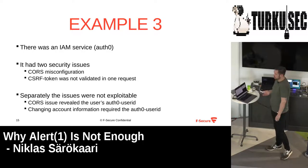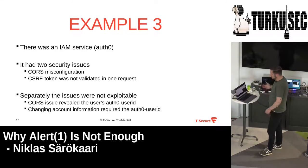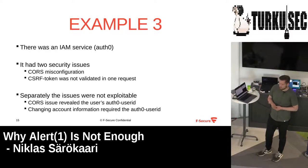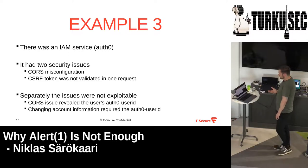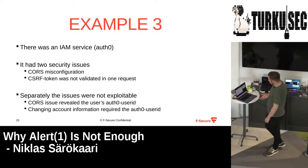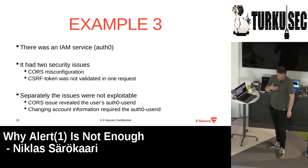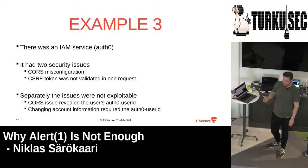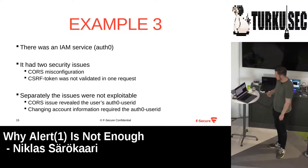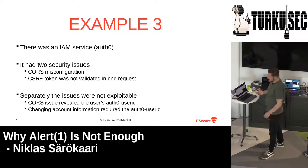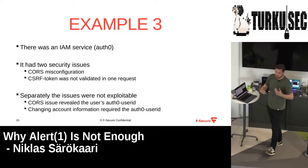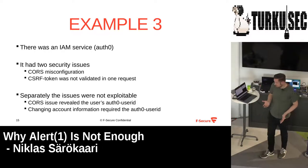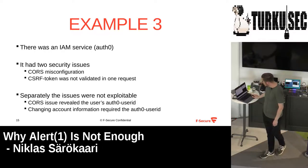You couldn't actually exploit these issues separately — you needed both of them. You know how the account change information works, but you don't have the Auth0 user ID. So in this case you can use that CORS misconfiguration to get another user's Auth0 user ID by luring them to visit your site. From there it will return their Auth0 user ID in a response. Then you can use that value in the other exploit to modify their information. And again, you get an account takeover.